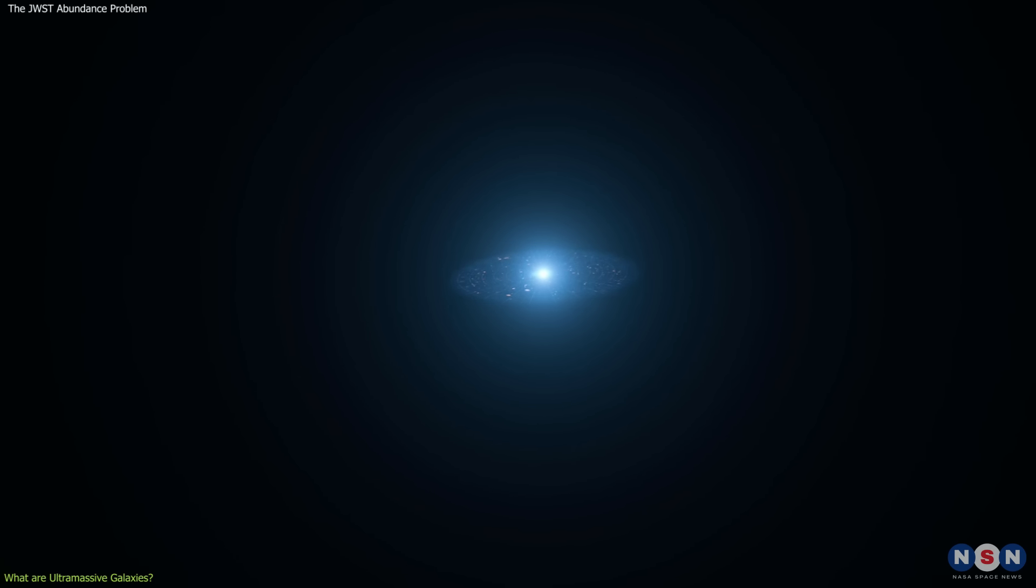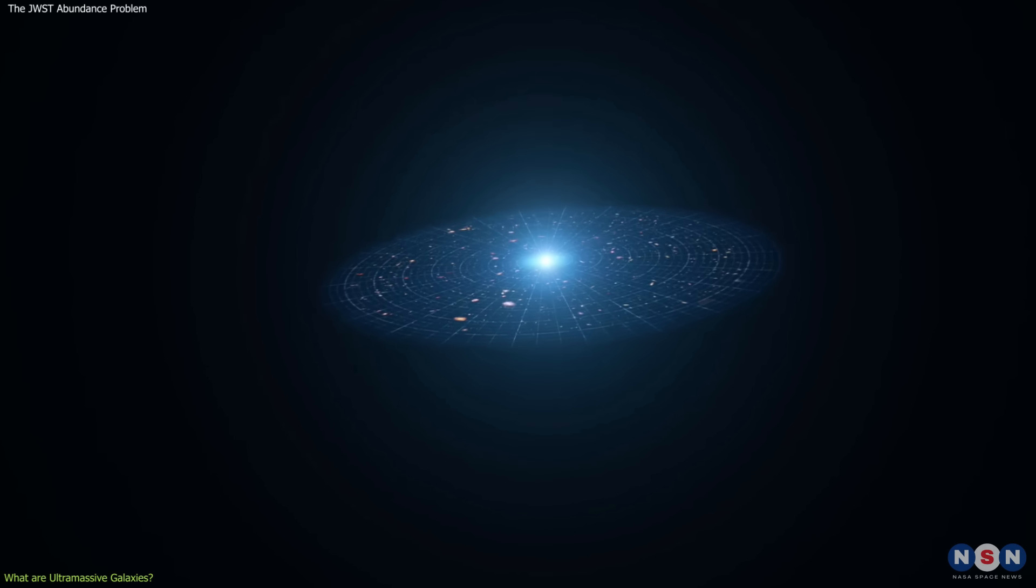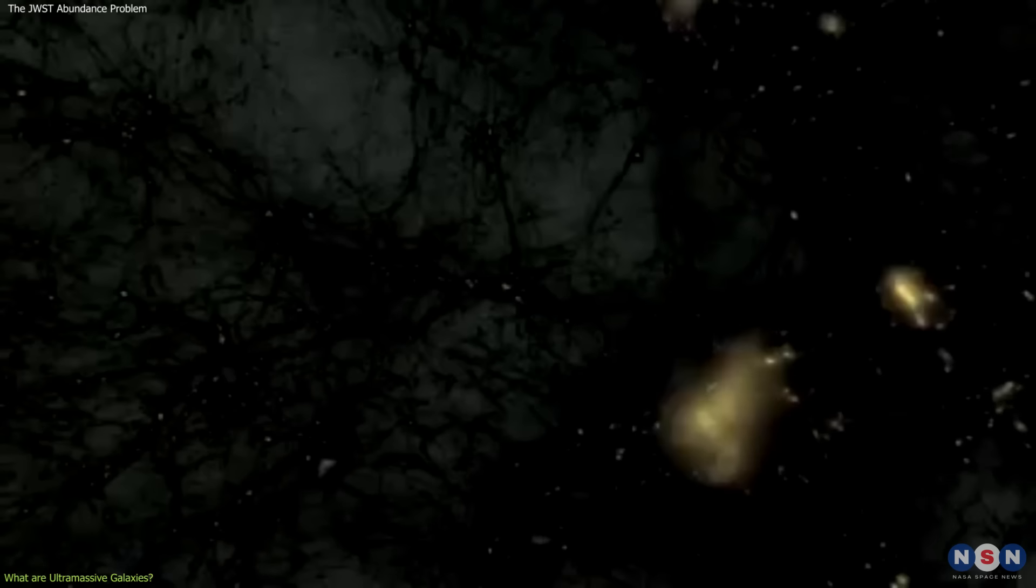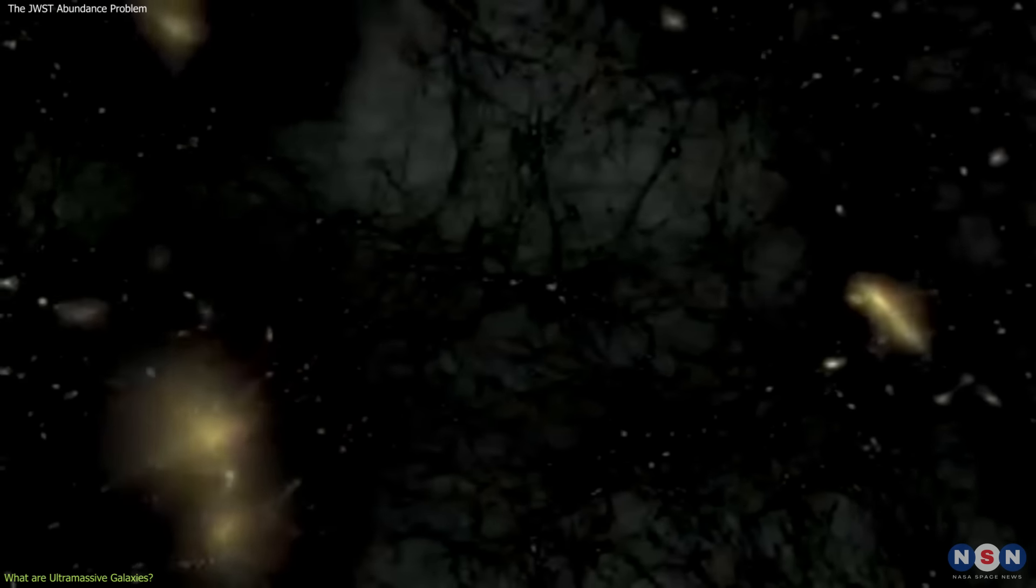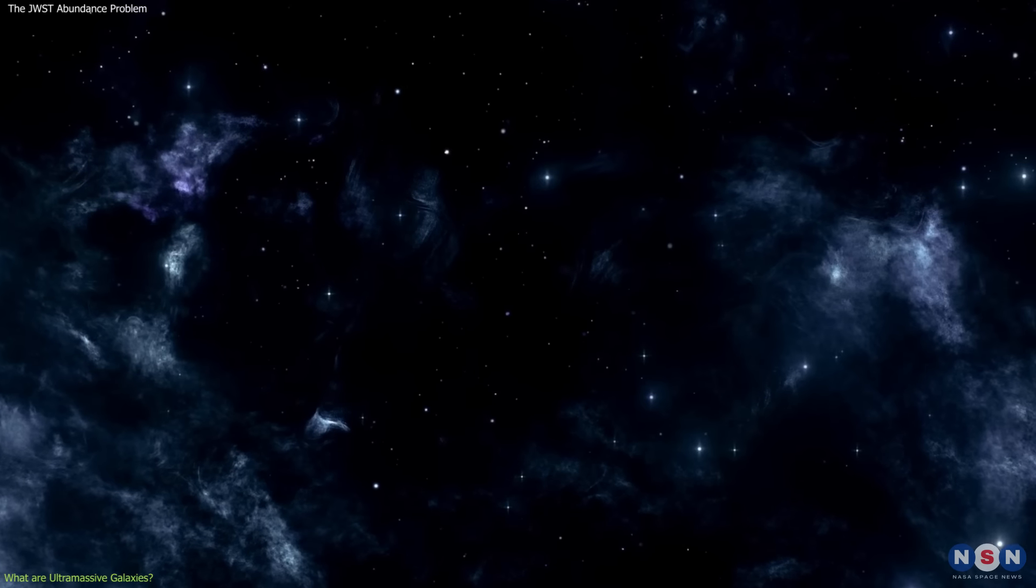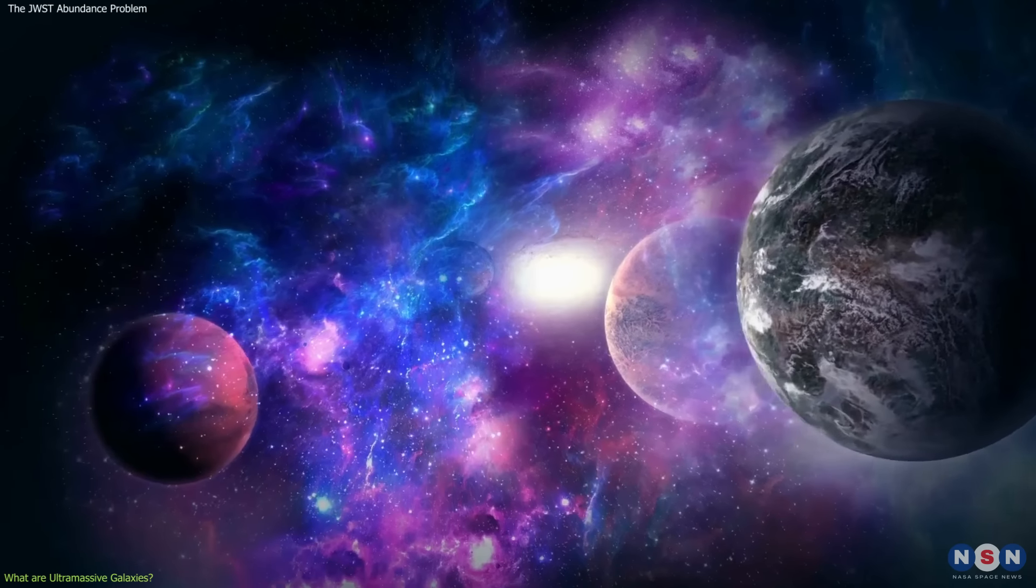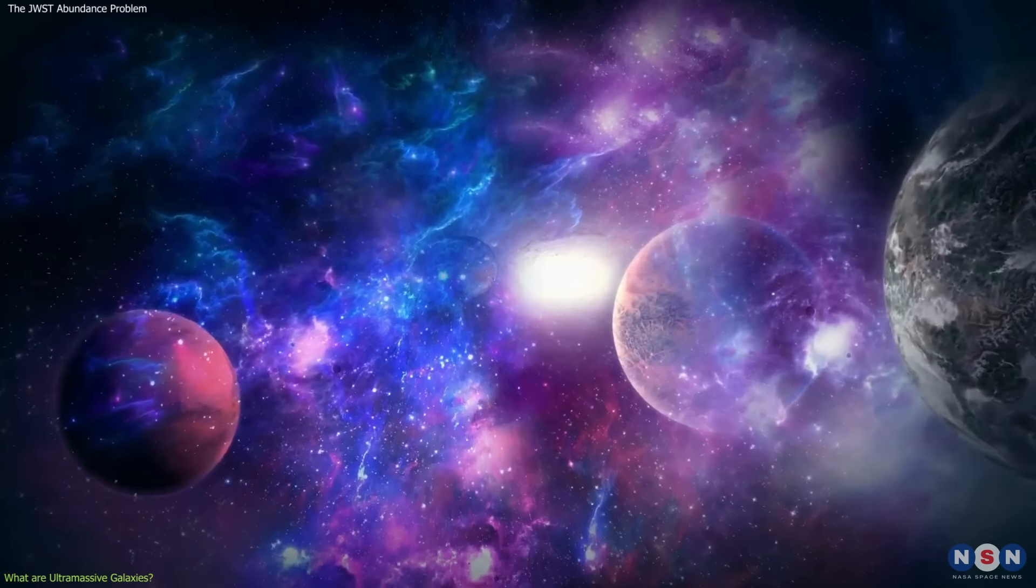Dark energy is a mysterious force that causes the expansion of the universe to accelerate, while dark matter is a type of invisible matter that interacts only through gravity and forms the scaffolding of the cosmic web. Ordinary matter is the type of matter that we are familiar with, and it forms the stars, planets, and galaxies that we can see.